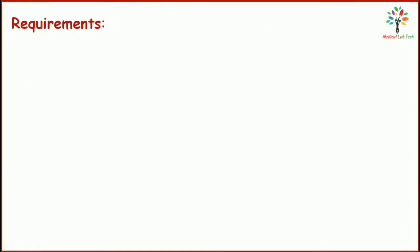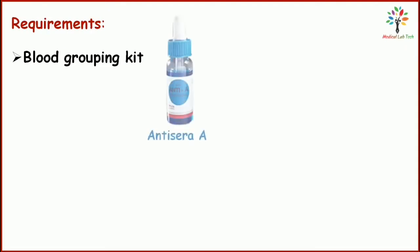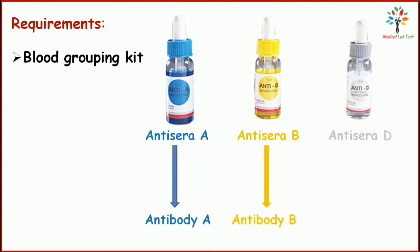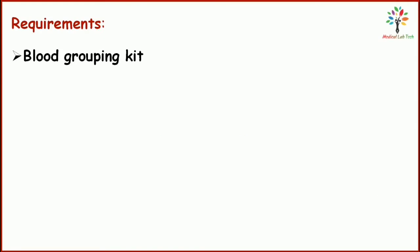Now we are going to talk about the requirements of the test. We need a blood grouping kit, which will contain antisera A (containing antibody A), antisera B (containing antibody B), and antisera D (containing antibody D). These three antisera will be present in the blood grouping kit. We also need three test tubes.